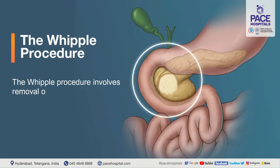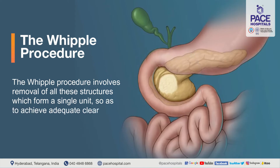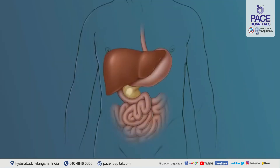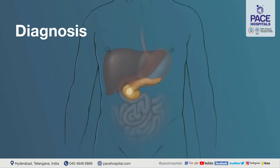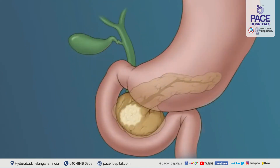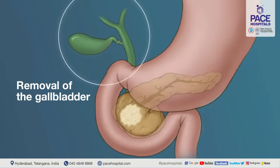The Whipple's procedure involves removal of all these structures, which form a single unit, so as to achieve adequate clearance in patients with pancreatic and peri-ampullary cancers. When a patient comes with such a cancer, they initially undergo a CT scan, EUS, and a PET CT scan to evaluate the tumor and confirm it is limited to the pancreas and not spread beyond it. Once that is done, we proceed with surgery. In the Whipple's operation, the gallbladder is removed because its blood supply and innervation come from the duodenum, and it becomes non-functional after the surgery.